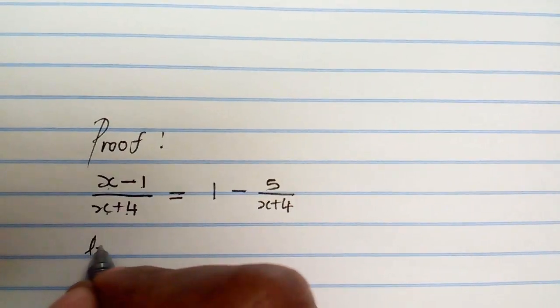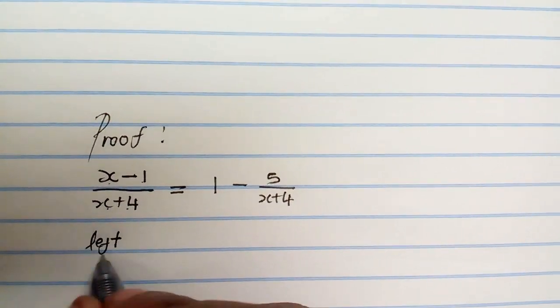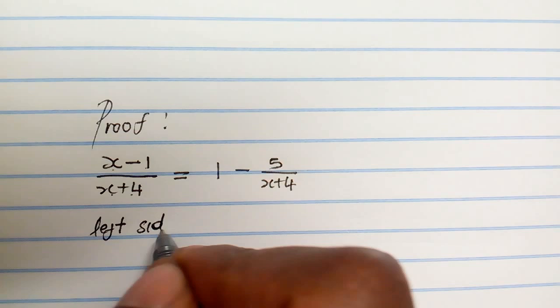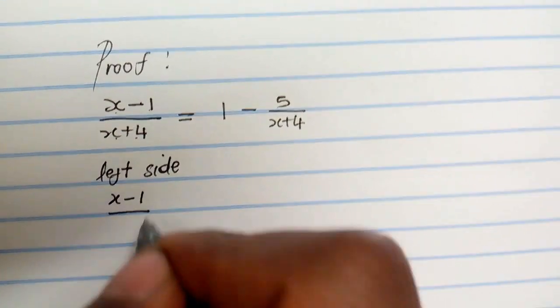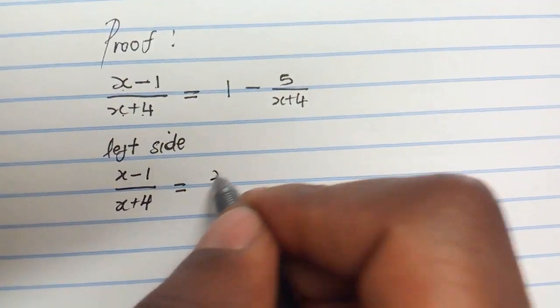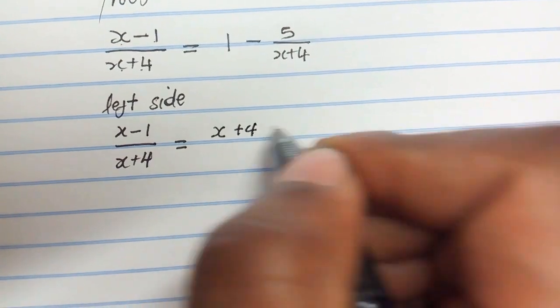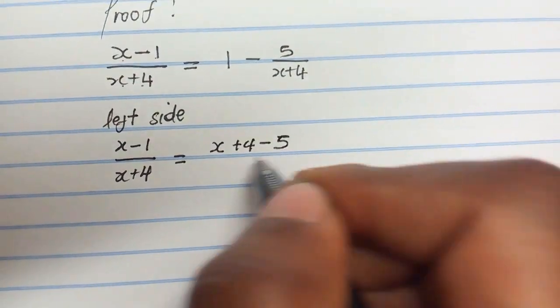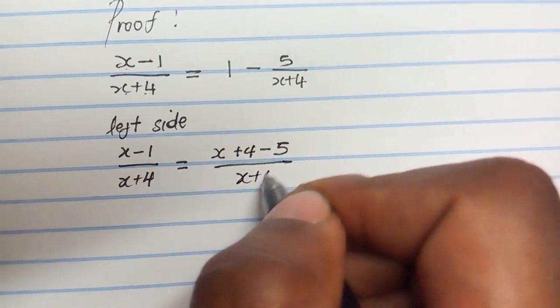So now first step, you take the left hand side, which is the one that you want to prove. So we take left hand side x minus 1 all over x plus 4 and we rewrite this as x plus 4 minus 5 all over x plus 4.